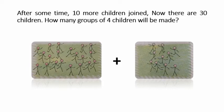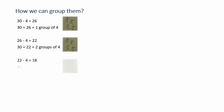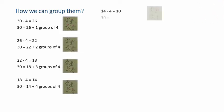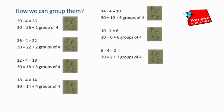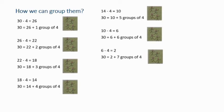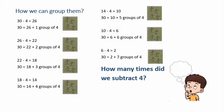Now we will do the similar calculations as we did in the previous example. Here you can see 7 groups of 4 children are made but 2 children are left out. Sometimes we may not be able to equally group or equally share all the objects. The number that is left over is called the remainder. It is always smaller than the divisor.